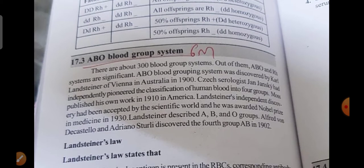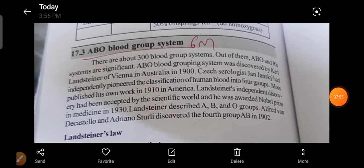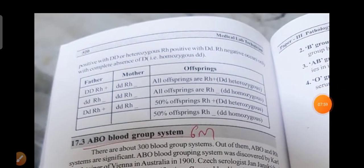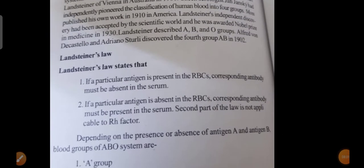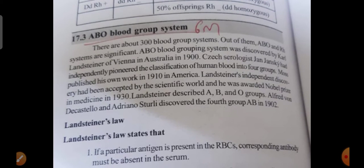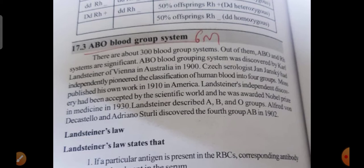The ABO blood group system is also an important six-mark question. There are about 300 blood group systems in total. Out of these, the ABO and Rh systems are the most significant.